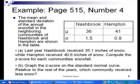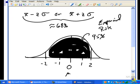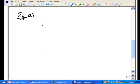The mean and standard deviation of the annual snowfall in the neighboring communities of Nashbrook and Hampton are shown in the table. Part A says last year Nashbrook received 35.1 inches of snow and Hampton received 40.6 inches. Compute the z-score for each one, then graph them on the normal curve. Then answer: relative to the rest of the years, which community received less snow? Nashbrook received 36 inches of snow with a standard deviation of 1.5. Hampton was 41 inches with a standard deviation of 0.8. Let's solve this now.